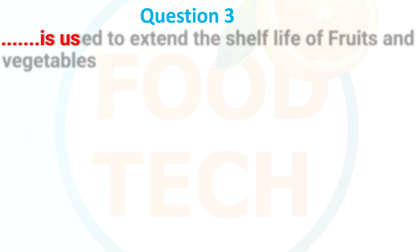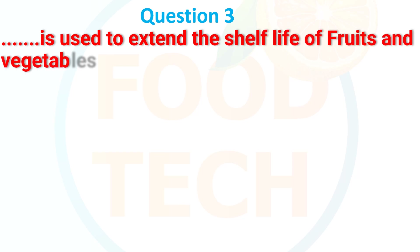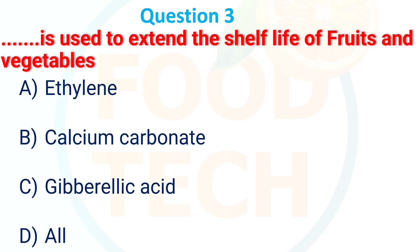Dash is used to extend the shelf life of fruit and vegetable: a) ethylene, b) calcium carbonate, c) gibberellic acid, d) all. The answer is gibberellic acid.